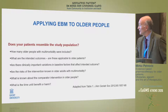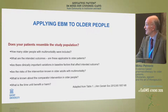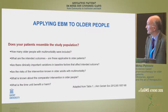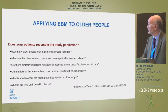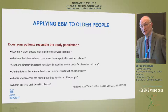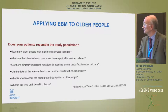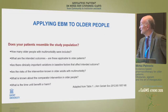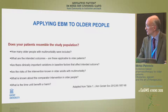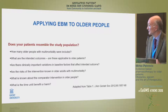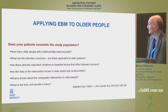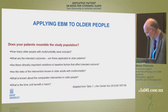When we address an older person with multi-morbidity, there are several questions to ask. With regard to clinical trials: how many older people with multi-morbidity are really included in those specific trials? What are the intended outcomes, and are these outcomes really applicable to all the patients we deal with in daily practice? Are there any clinically important variations in baseline factors that affect the intended outcome? As Dr. Burazeri indicated, standardizing methodology in research is very important.